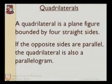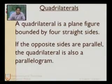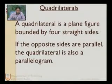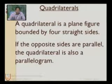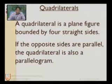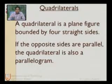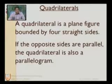A quadrilateral is a plane figure bounded by four sides. Any closed polygon formed by four straight sides is called a quadrilateral. If the opposite sides are parallel, it is called a parallelogram.